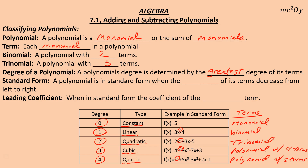A polynomial is in standard form when the exponents of its terms decrease from left to right. So looking at these exponents: x to the fourth, x to the third, x squared, x to the first, then no x's — that's 4, 3, 2, 1, 0 decreasing. You put the biggest degree first. That is called standard form. You usually write all your answers in standard form.